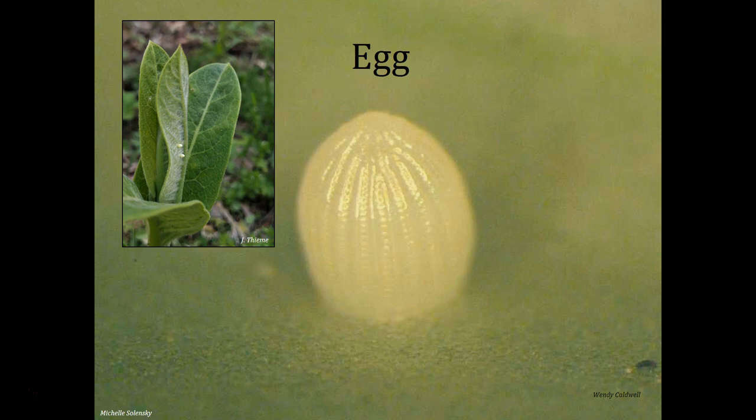Monarchs only lay their eggs on milkweed plants. We have a separate training video on how to identify milkweed plants. Notably, monarchs are not the only insects to lay eggs on milkweed, so it's important to know how to tell a monarch egg from other eggs or debris you might find on the milkweed plant. Monarch eggs are about the size of a pinhead. They are visible to the naked eye, although a magnifying glass or hand lens can be helpful. If you don't have a magnifying glass, you could take a digital photo and zoom in on the screen.